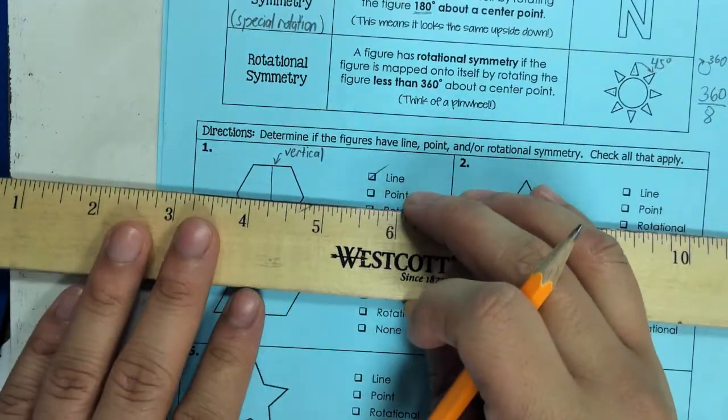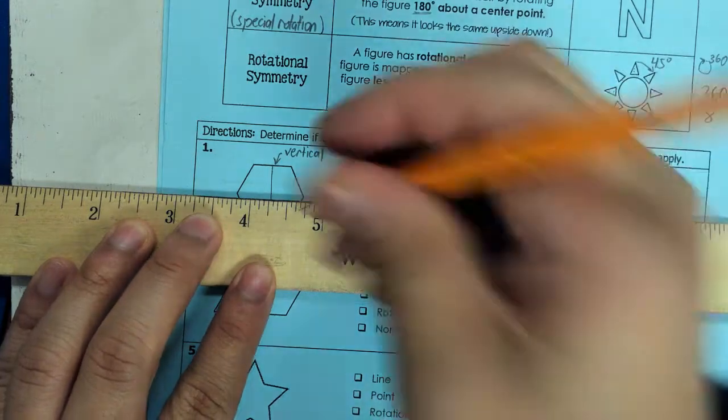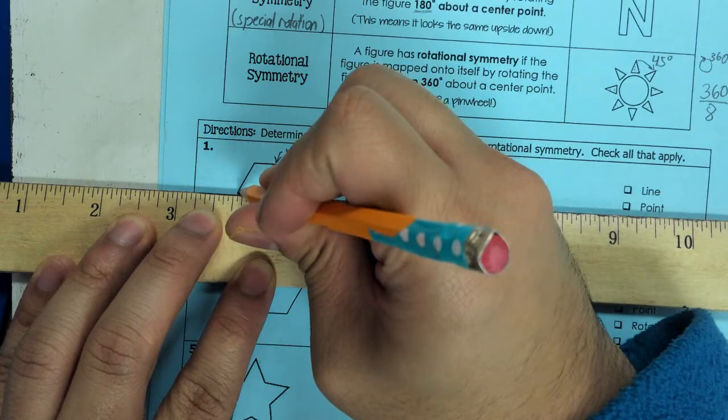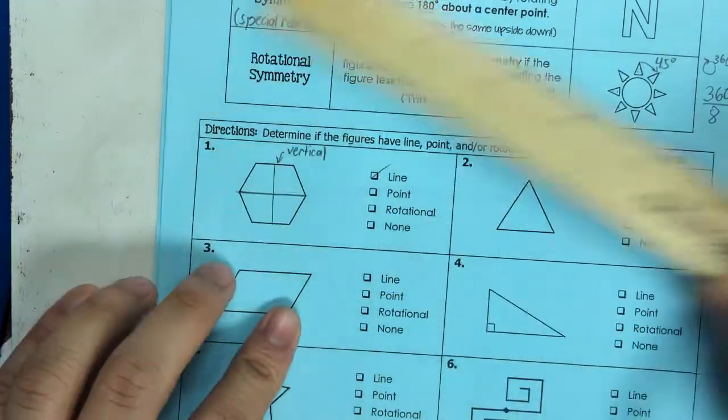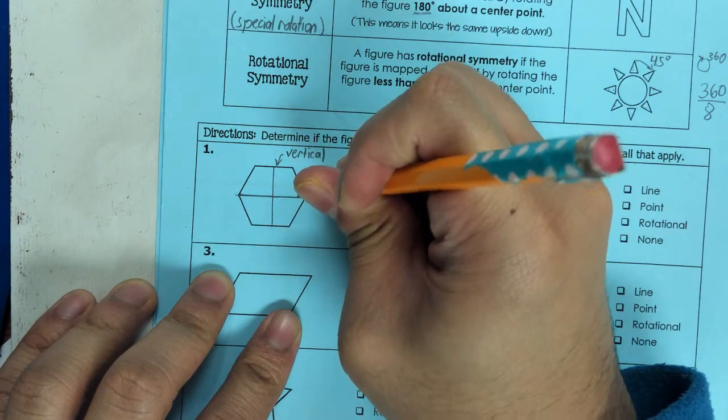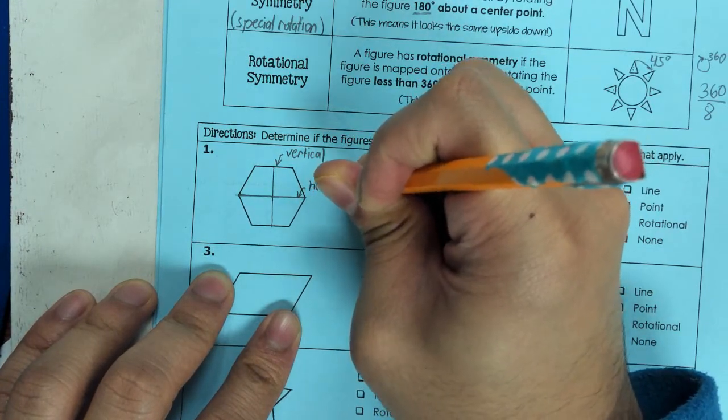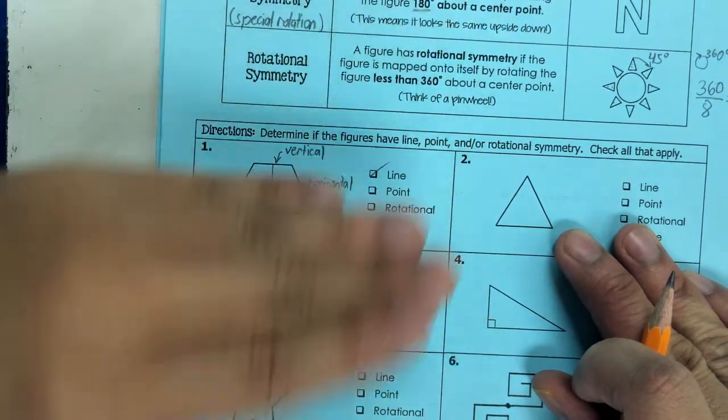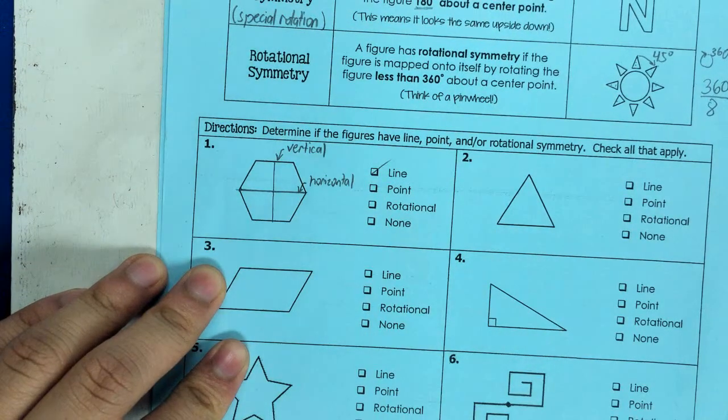We can also cut it down the middle. This is a horizontal line of symmetry, meaning if I fold this paper up this way both sides match.